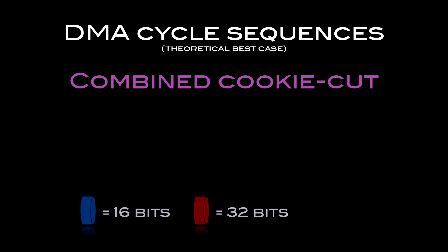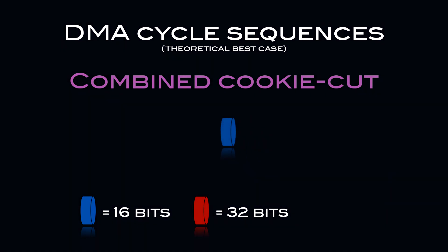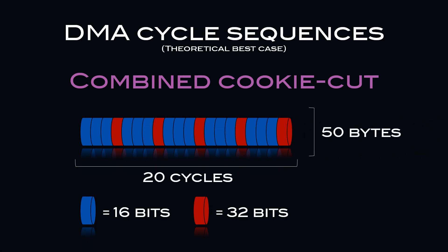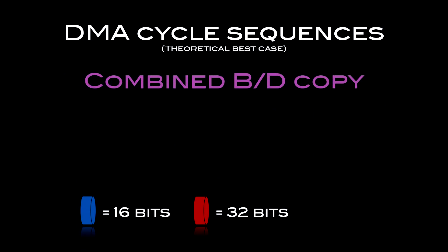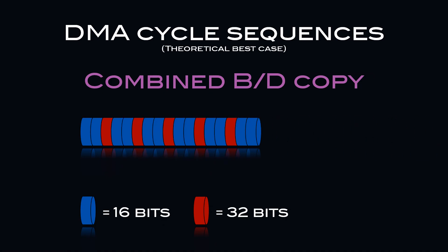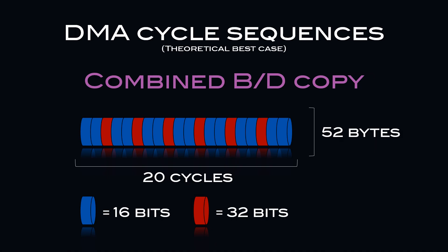So what happens when the blitter is running and you access memory with the CPU? What happens is that the blitter gives the CPU one cycle for every three cycles it has gotten, meaning the CPU effectively gets one in four cycles. But that cycle is 32-bit. As you can see in the diagram, the effect of this is that after 20 cycles, the CPU and blitter combined will have accessed 50 bytes of memory rather than the 40 normally accessed by the blitter in the same time. This is valid for the cookie cut blit and the standard copy. However, the B plus D copy introduces extra idle cycles which can be used by the CPU. As seen in the cycle diagram, this changes the results — in 20 cycles, we can now access 52 bytes with the blitter and CPU combined rather than the 50 bytes managed earlier.